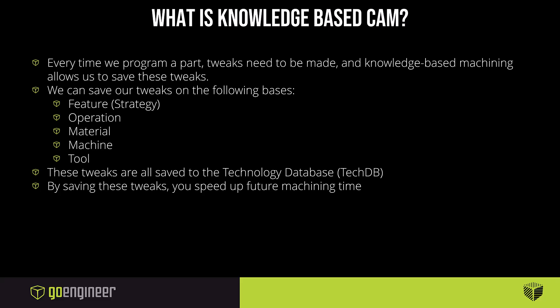We can save these tweaks on a variety of different bases. We can do it on the feature level for strategies, and that's also what we'll be touching on in this series. We can do it at the operation level — parameters like step-down and things like that. We can even save our tweaks to only be applied to particular materials or material classes. And we can save tweaks to only be used on particular machines. We've all got the odd one out in the machine shop — the one machine that doesn't behave quite like all the others. You can build that into your CAM process using your knowledge-based machining strategies.